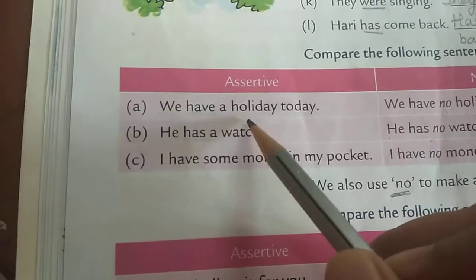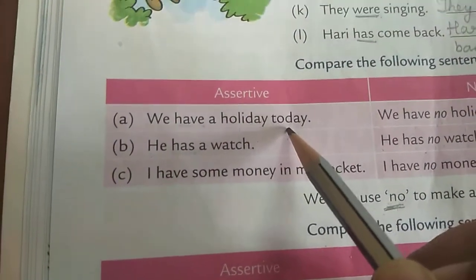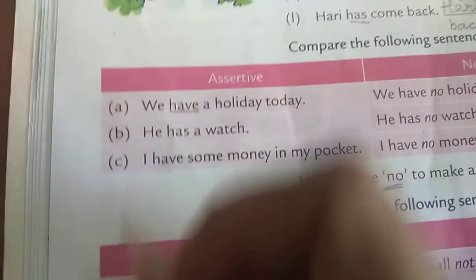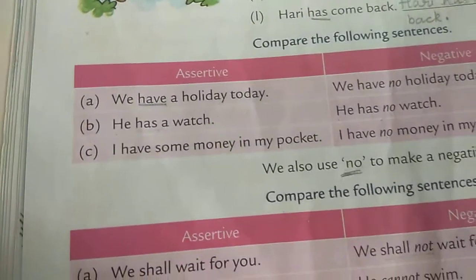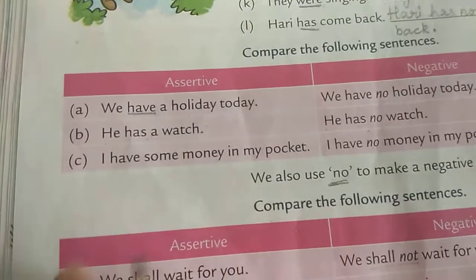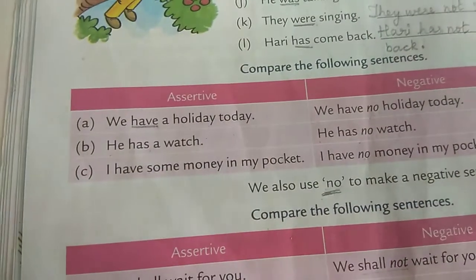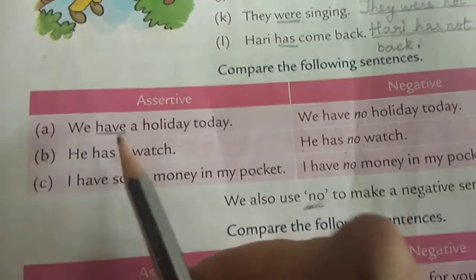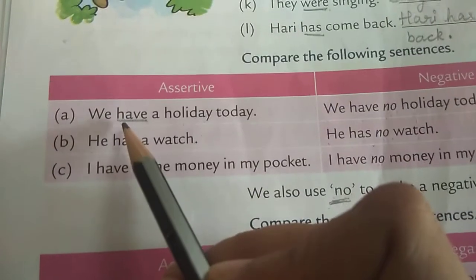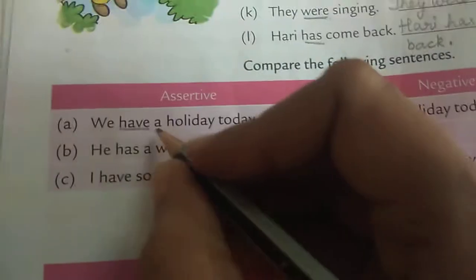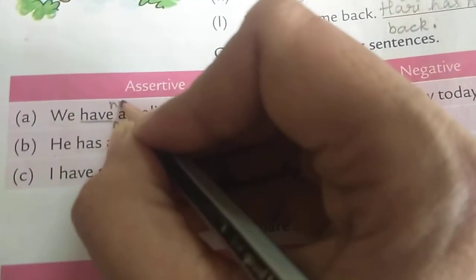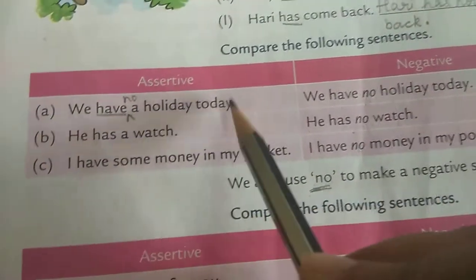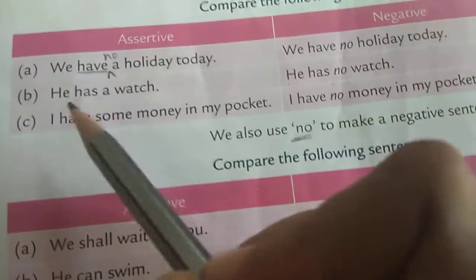Let us see the first sentence: 'We have a holiday today.' What is the helping verb? 'Have' is the helping verb. Whenever we change the sentence into negative, we add 'not' or 'no' to the sentence. Since the helping verb is 'have', after the helping verb we are going to add 'no': 'We have no holiday today.'